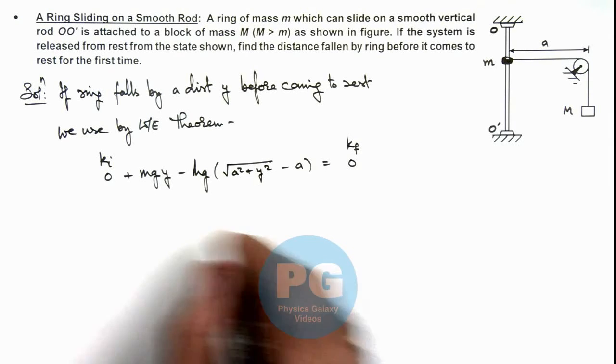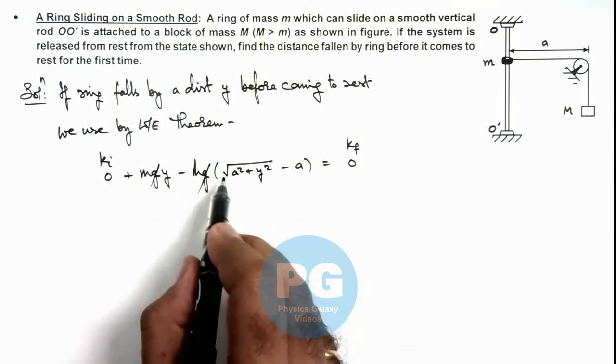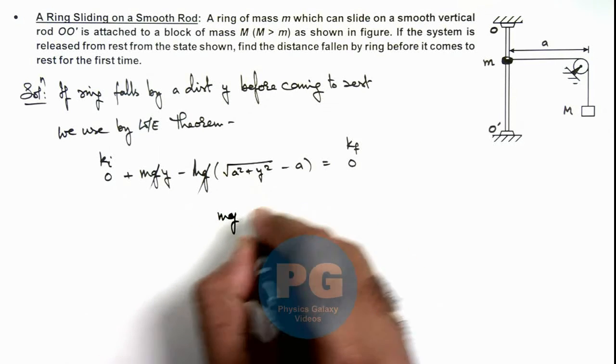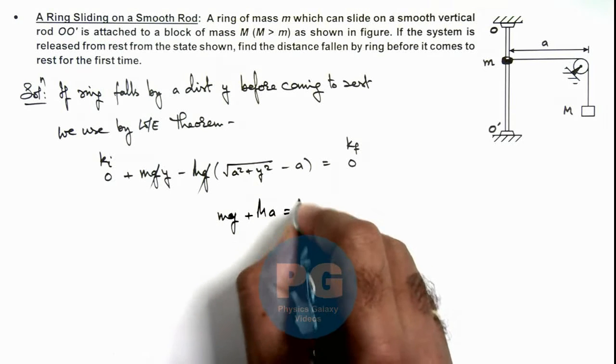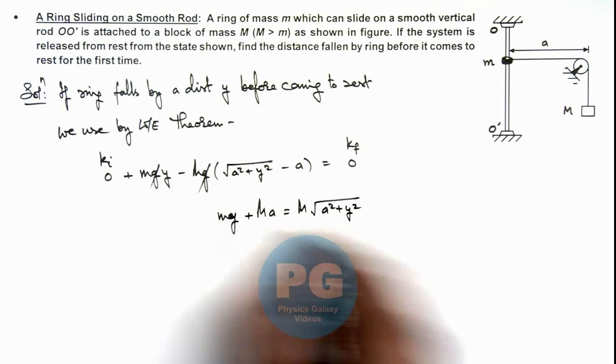So in this situation, here g gets cancelled out. And if we take this term on the right hand side this will be my plus capital M ay is equal to capital M root of ay square plus y square.